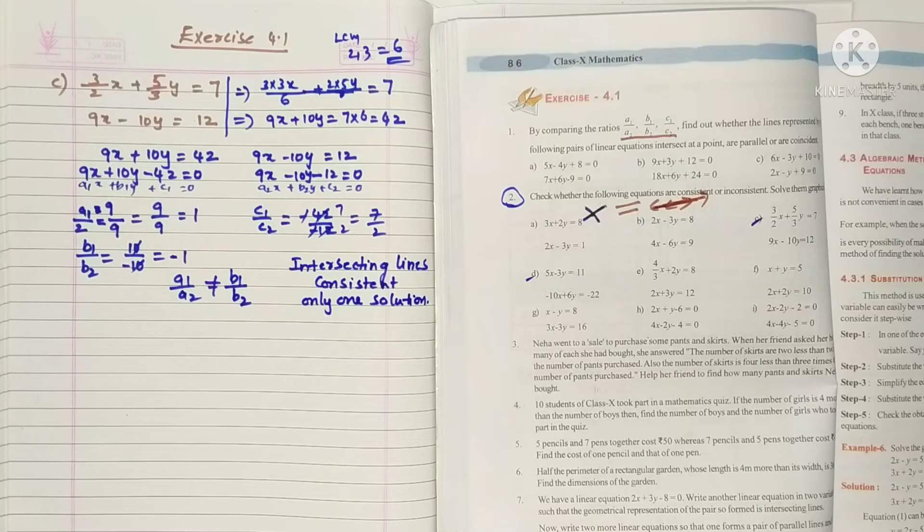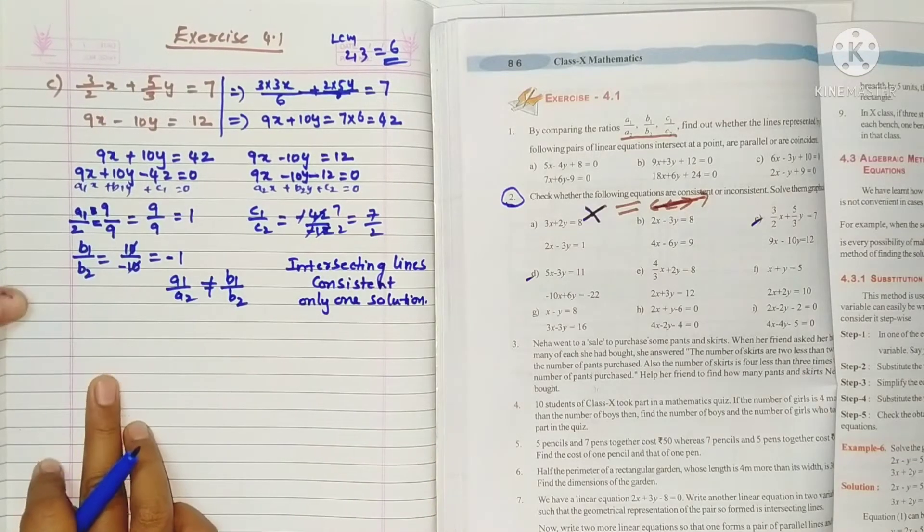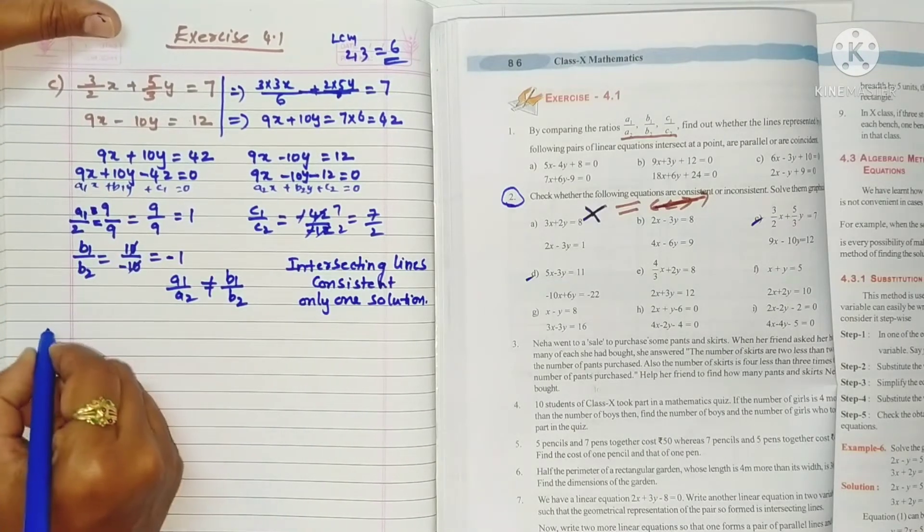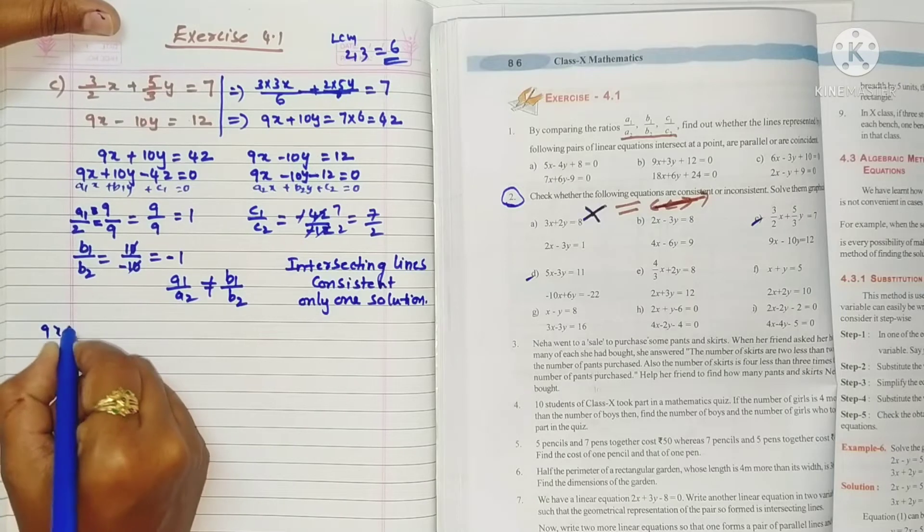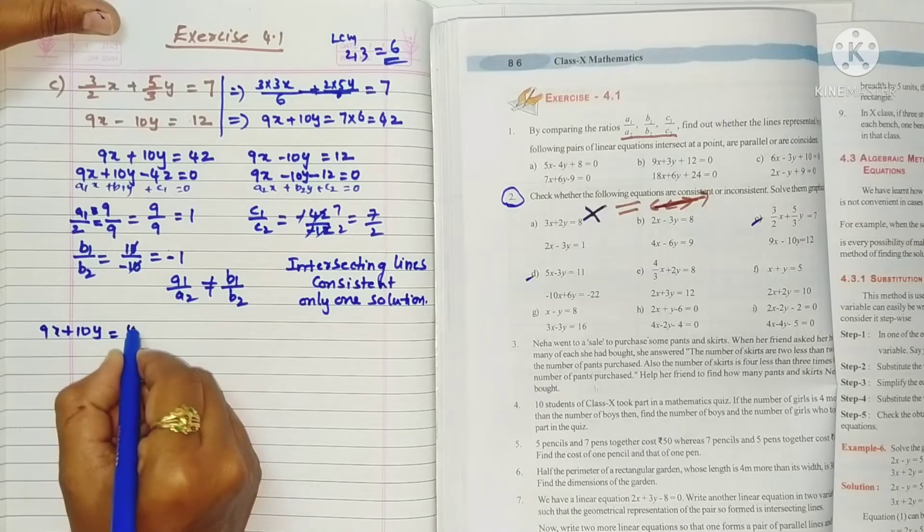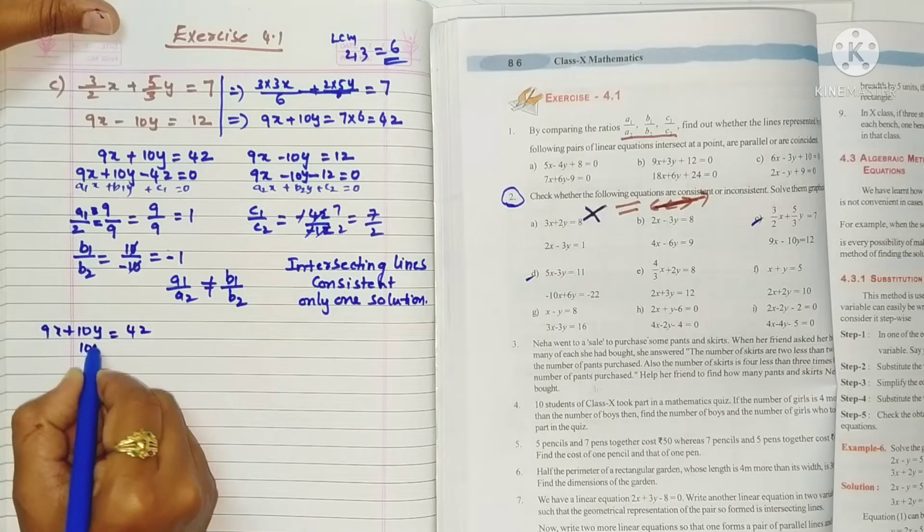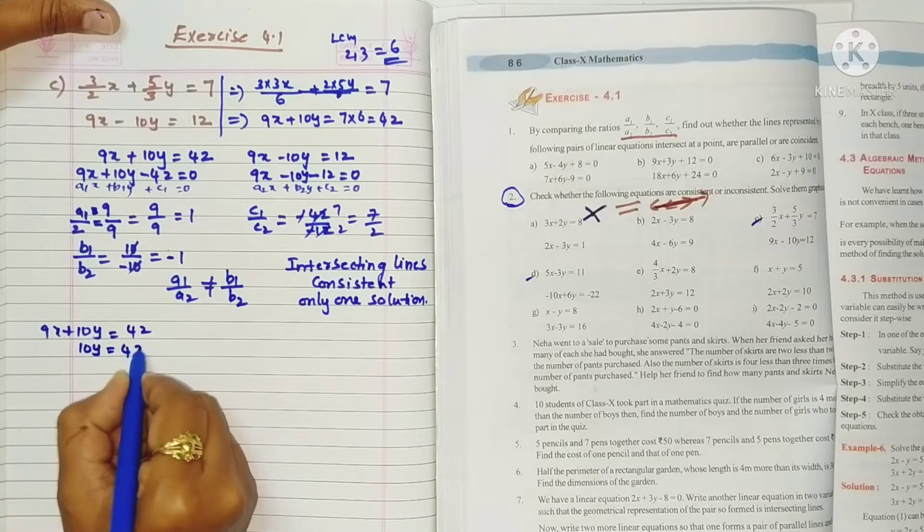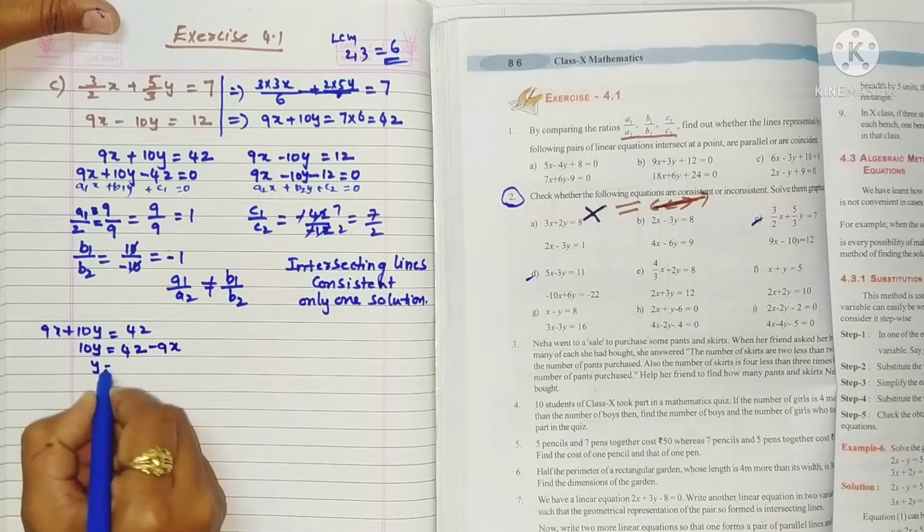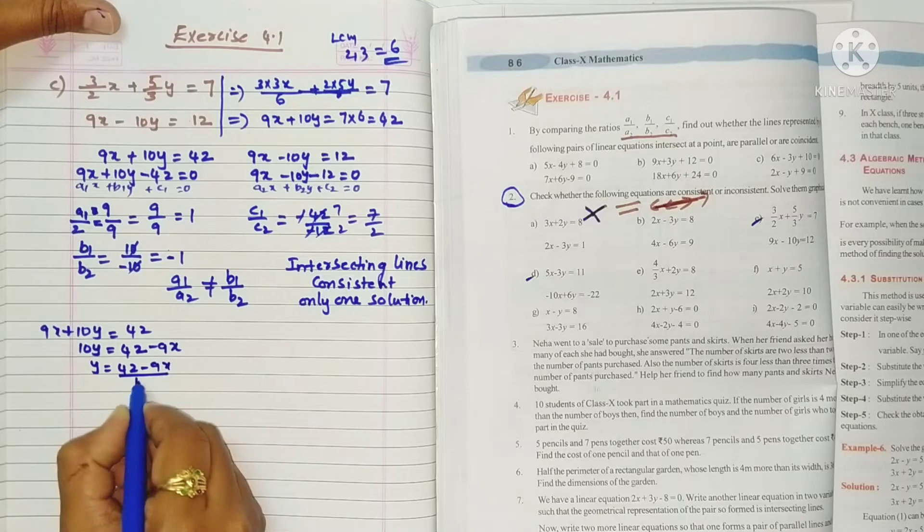Now we have to solve them graphically also. So take the first line, this is the first line: 9x plus 10y equals 42. So we need to find the y value. If we transpose minus 9x, y equals 42 minus 9x by 10.